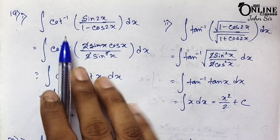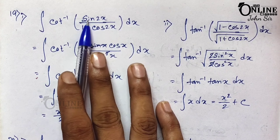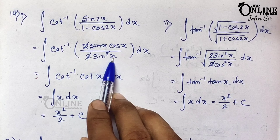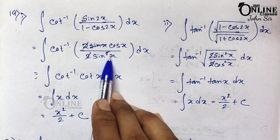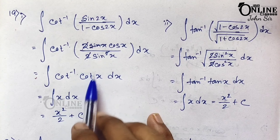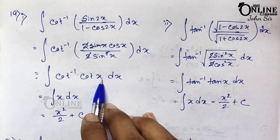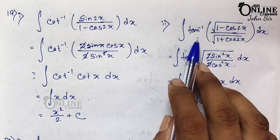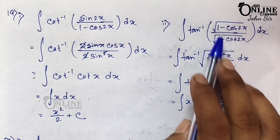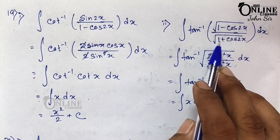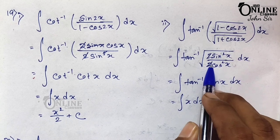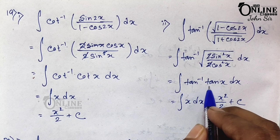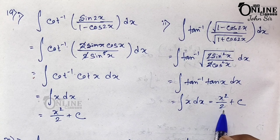Sum 19.1: integration of cot⁻¹(sin 2x / (1 − cos 2x)). Using sin 2x = 2 sin x cos x and 1 − cos 2x = 2sin²x, the 2s and one sin x cancel, giving cos x/sin x = cot x. So cot⁻¹(cot x) = x. Integrating x dx: x²/2 + c. Sum 19.2: integration of tan⁻¹(√((1−cos2x)/(1+cos2x))). Using 1−cos2x = 2sin²x and 1+cos2x = 2cos²x, ratio = tan²x, square root = tan x. So tan⁻¹(tan x) = x. Integrating: x²/2 + c.